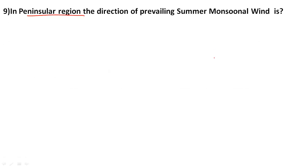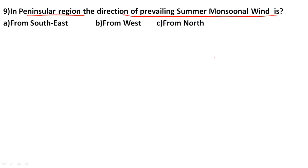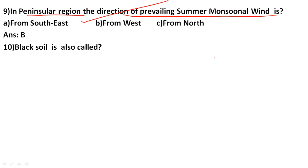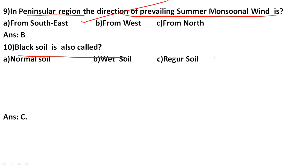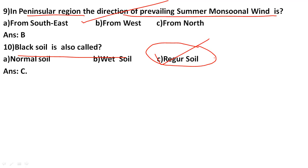In the peninsular region, the direction of the prevailing summer monsoonal wind is which direction? The correct answer is B, from the west. Also, black soil is also called Regur soil — option C, Regur soil, is the other name for black soil.